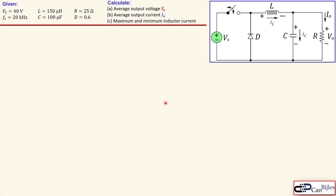We use the exact same circuit as seen in previous examples about the buck converter. The only change is the inductor value, which is in this case 150 microhenries. We will see what the effect is of this change. Again the same questions: average output voltage, average output current, and also the maximum and minimum inductor current.